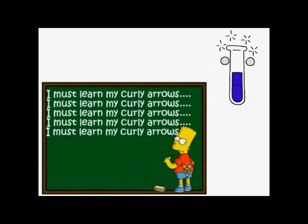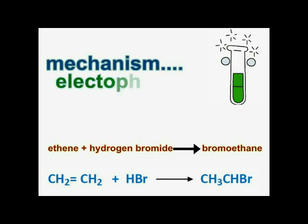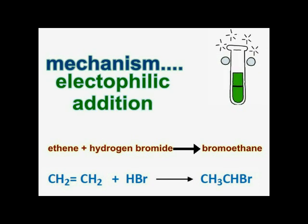Let's see this in practice. When hydrogen bromide reacts with ethene, bromoethane is formed, like this. The mechanism for this, by the way, is electrophilic addition, and the story is as follows.